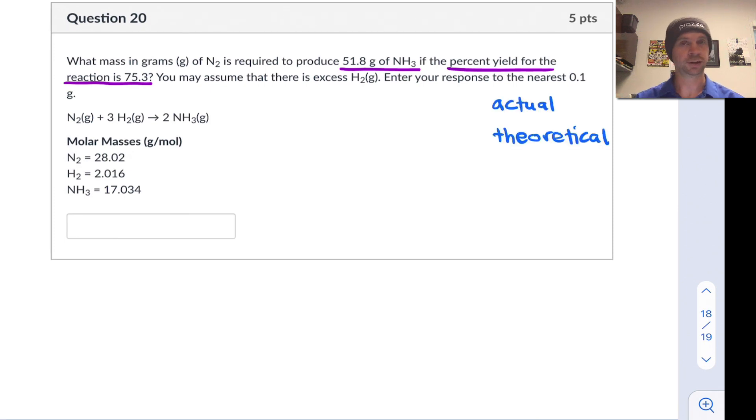But the theoretical yield that we need to shoot for will be higher than 51.8 grams. And this is because the percent yield of the reaction is only 75.3 percent. So we need to shoot for more than 51 grams if we want this reaction that does not give perfect yield to produce that amount of product.